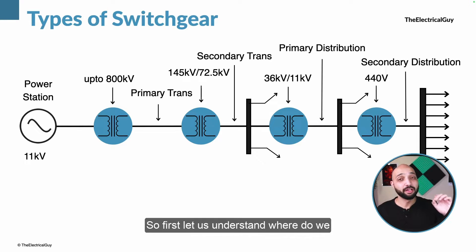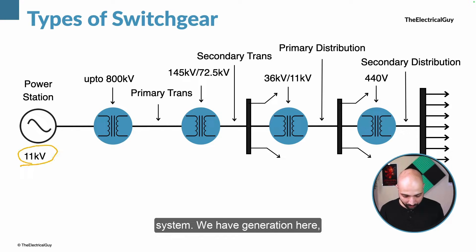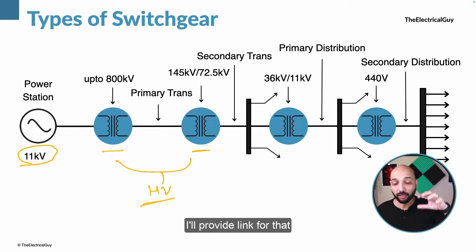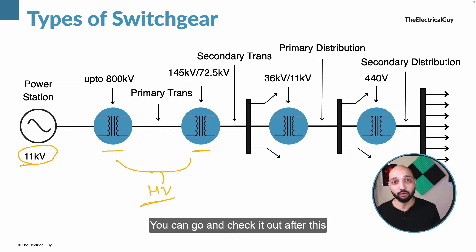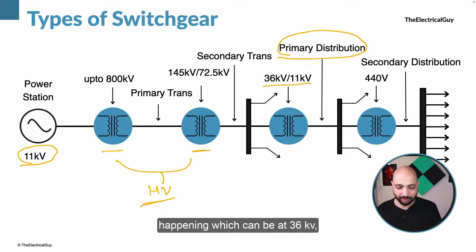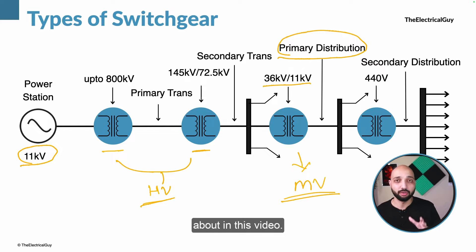First, let us understand where we need medium voltage switchgear. What you can see on your screen is the single line diagram of a typical power system. We have generation, then primary transmission, then sub-transmission — here we would need the HV switchgear covered in the previous video. After the sub-transmission zone there will be primary distribution, which can be at 36 kV, 11 kV, or anything above 1 kV — and here we need the medium voltage switchgear.